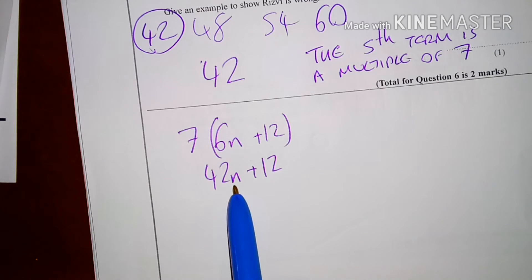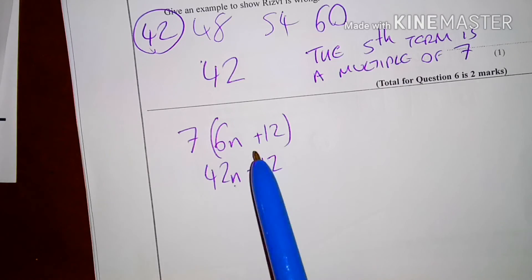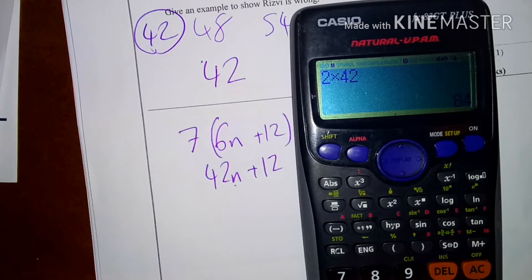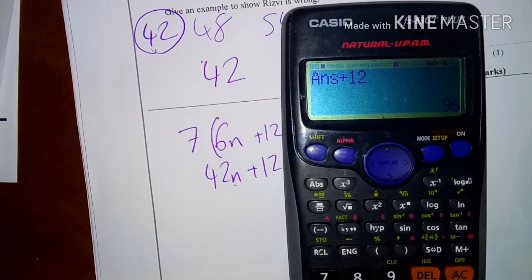Now, any value of n I put in will give me a term that's in the sequence that is also a multiple of 7. So, if I put 1 in, I'd actually get 42. If I put 2 in, I'd do 2 times 42 plus 12. It's 96, which is also in the 7 times table and in the sequence.